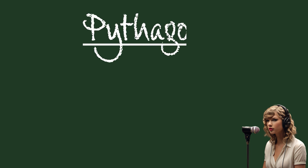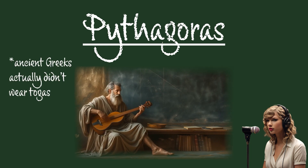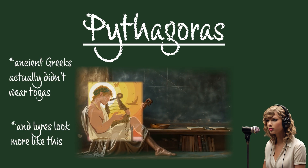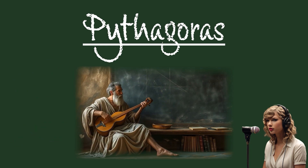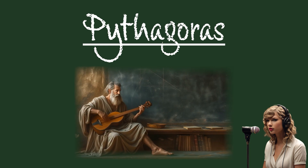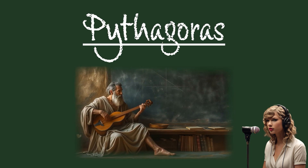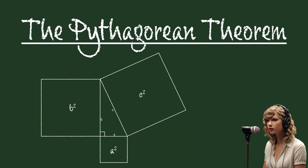a little background on our good friend Pythagoras. He was chilling in his toga, probably strumming a lyre and pondering the secrets of the universe, when one day he stumbled upon a fascinating discovery. Legend has it that Pythagoras was obsessed with right-angled triangles, and in a moment of sheer genius, Pythagoras realized that the square of the longest side of the triangle is equal to the sum of the squares of the other two sides.